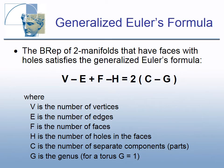The variables of two-manifolds that have faces with holes satisfy the generalized Euler's formula. The new items are: H is the number of holes in the faces, C is the number of separate components or parts, and G is the genus — the number of through holes or handles. For a sphere G is 0; for a torus G is 1.